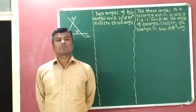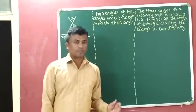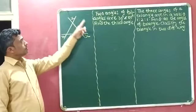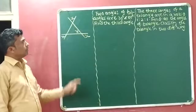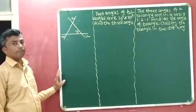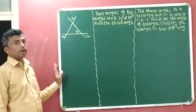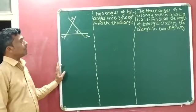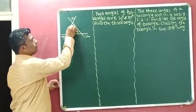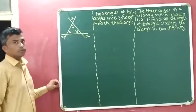Now we will discuss some more questions which are related with angle sum property. See here, in this figure, we have to identify the value of x and y. To identify value of x and y from this figure, first we will mark angle 1 and angle 2. Here I marked angle 1, and here I marked angle 2.